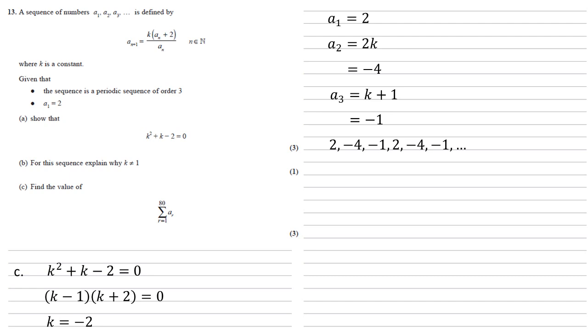We've got this order of 3, we're trying to sum up to 80. Well if we did 27 lots of this 3, we'd get to the 81st term. So the 81st term must be one of our minus 1s. We only want 80 terms. So we're going to have 27 twos, 27 minus 4s, and just 26 minus 1s in our first 80.